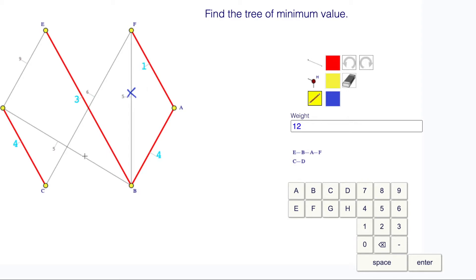I have another five down here. I could use this five. If you click on it, it doesn't make a circuit, and it connects this CD. So we have E to B to A to F, and we've got a little connector going to CD. This is building the tree diagram for us right down here.